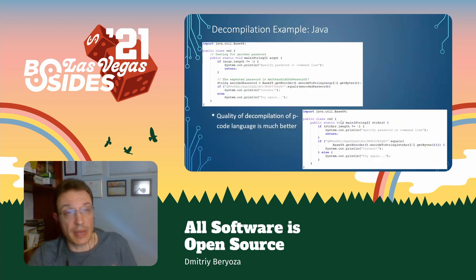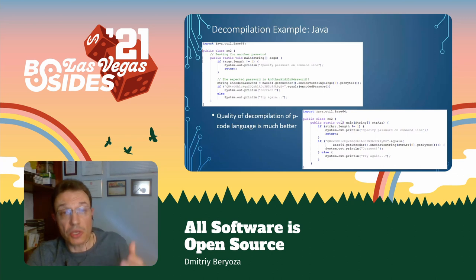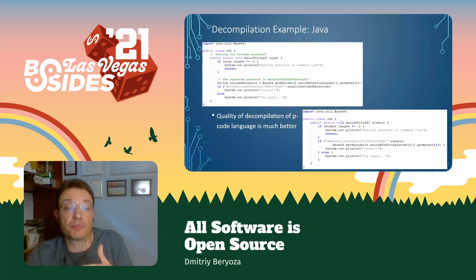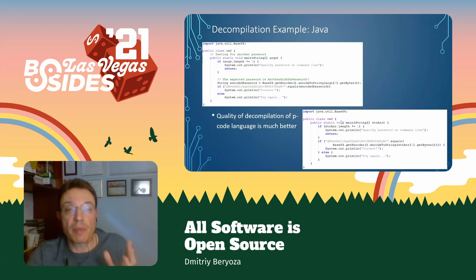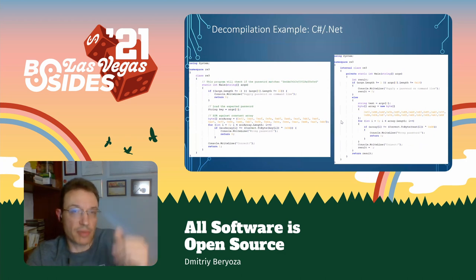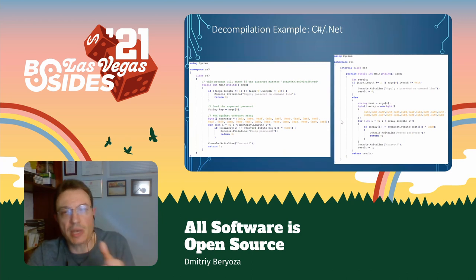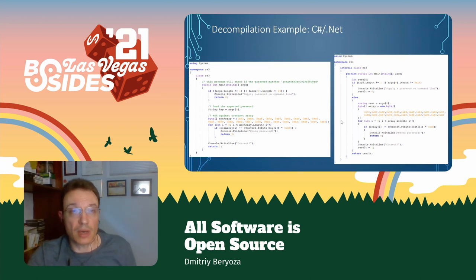If you look at languages that compile into portable code such as Java, the picture is even better — you get almost a one-to-one correspondence between what the compiler produces and the original Java code. You lose little things: some descriptive comments, variable names, maybe sometimes function names. The same goes for .NET code generated for C#. Here's a C# example, and on the right is the decompiler presentation — again, almost a one-to-one correspondence, which is pretty encouraging.